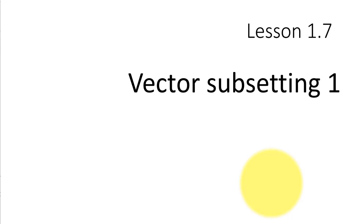In this lesson, we'll take a look at subsetting of vectors — in other words, getting access to a subset of the elements of a vector. When we operate on vectors, we don't always want to operate on all the elements. We may want the first ten elements, an individual element, elements from the tenth to the fifteenth, or elements which satisfy some condition. So we need to understand how to access a subset of vectors, and that's what this lesson is going to be talking about.